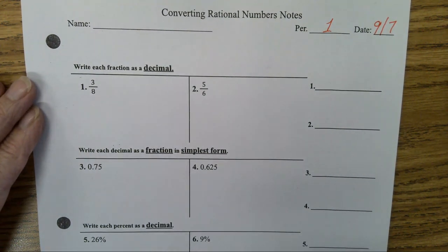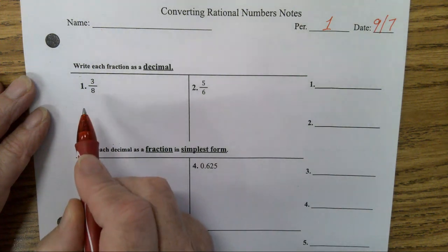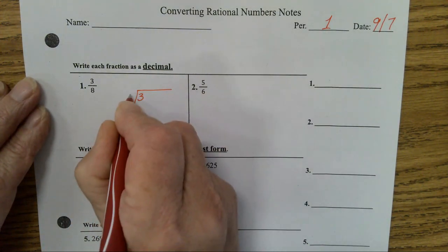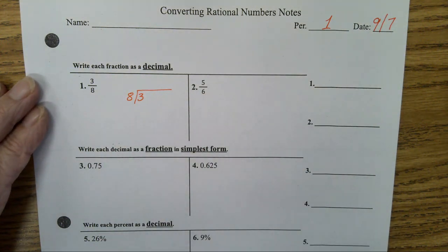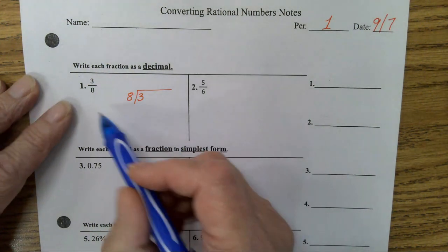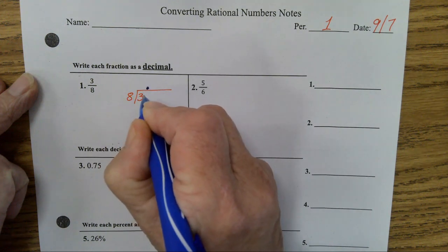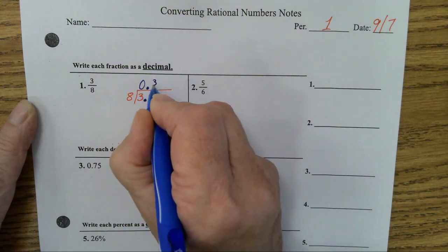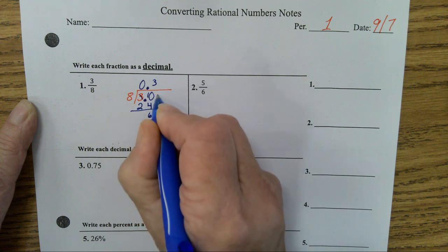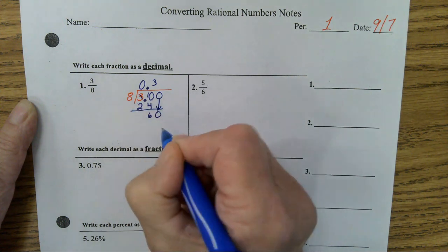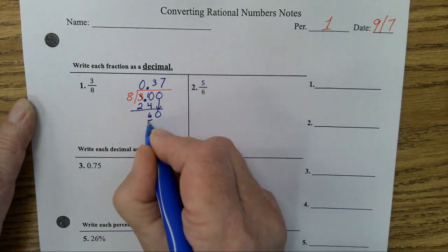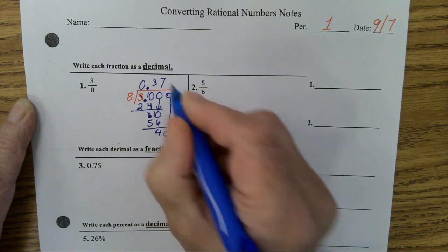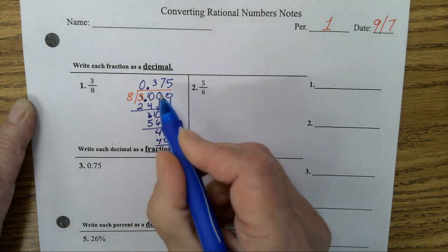Write each fraction as a decimal. How do you change a fraction to a decimal when the denominator is not a factor of 100 or 10 or 1,000? We divide. That's right. Put the 3 in the box, the 8 outside. The numerator goes in the box, the denominator stays outside. Add a decimal point, because how many 8s are in a 3? No 8s are in a 3. Add a 0. How many 8s are in a 30? 3. 8 times 3 is 24. Subtract. Add another 0. Bring it down. How many 8s are in a 60? 7. Subtract. Add another 0. Bring it down. How many 8s are in a 40? 5. So the answer is 0.375.